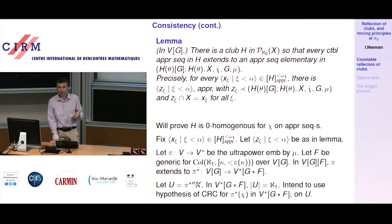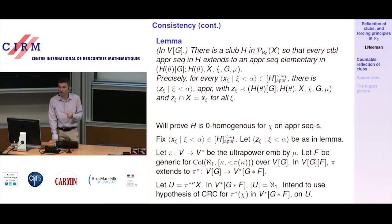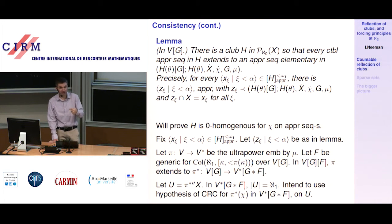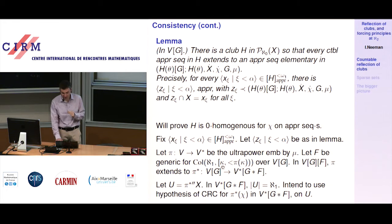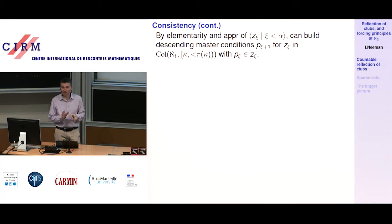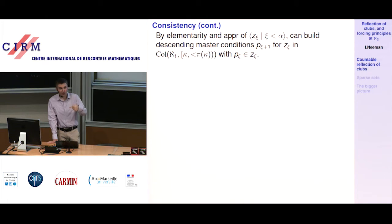Use the hypothesis of countable reflection of clubs on this U to get a club in U which is 0-homogeneous, then argue that the sequence is mapped exactly into this club, so the image of chi takes value 0 on the image of this sequence. The Z_xi's are all elementary in H_theta and approachable — each belongs to the next, and the whole sequence up to Z_xi belongs to Z_xi. From this and countable closure of the forcing to add F, you can build master conditions for all these Z_xi's — going over them one by one, using countable closure to build a master condition, using approachability to ensure each master condition is inside the next model.